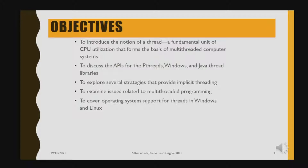So what is the thread in the operating system? A thread is the flow of execution through the process code — it is a flow of execution within a process. If we talk about multi-threading, we have multiple flows of execution through a process.